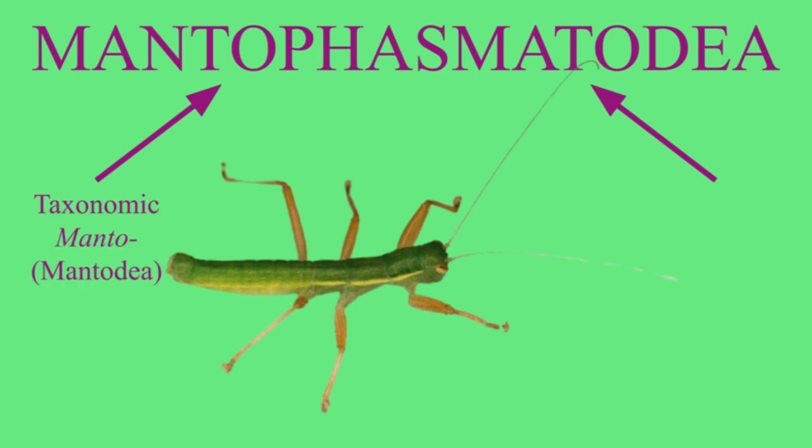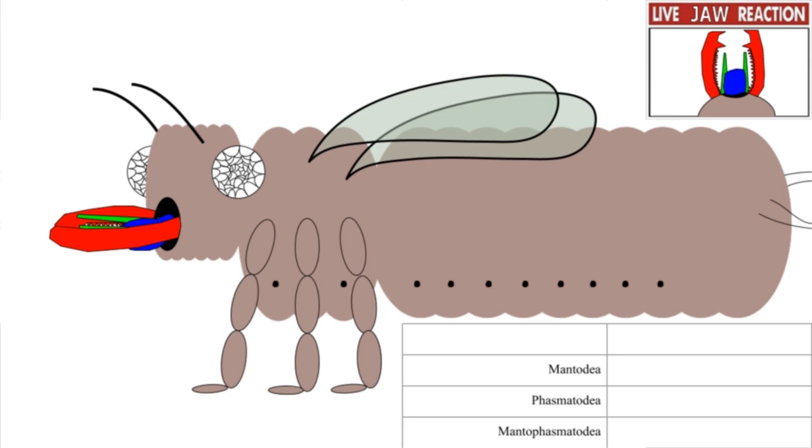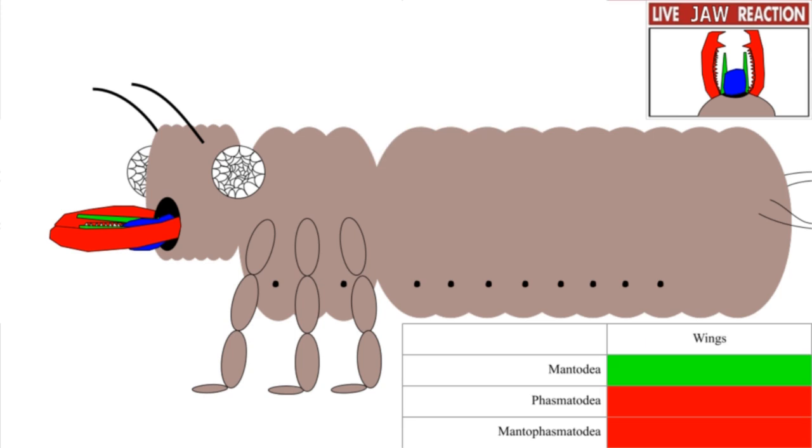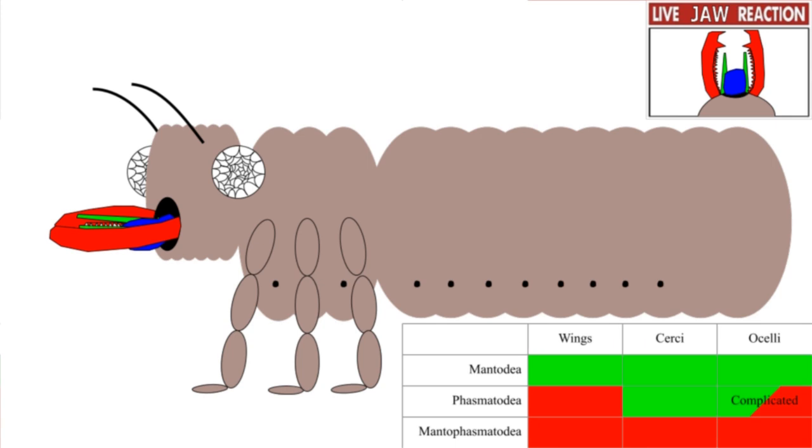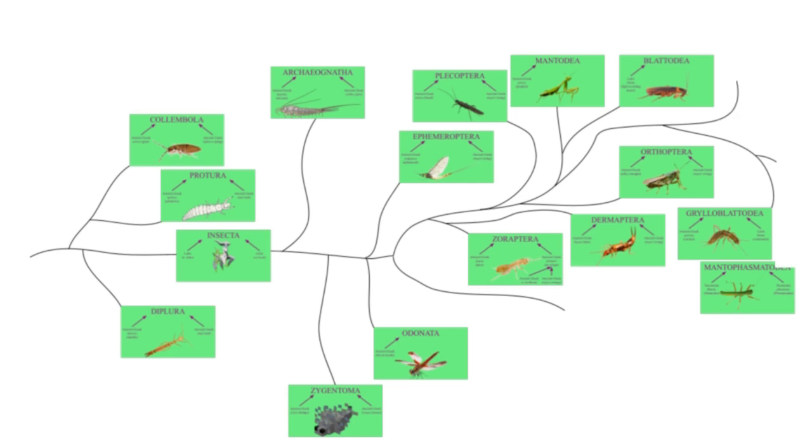Mantophasmatodea. Mantophasmids are meant to be between mantises and phasmids, which we'll get to. Mantophasmids have no wings, even as adults, but other than that are poorly studied. They lack cerci, and the ocelli are gone too. Presumably, then, the mantis part is from their coloration. They're also called gladiators, and here's where the phasmid part comes from.